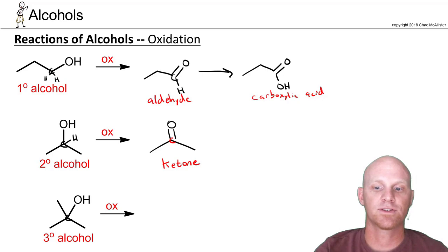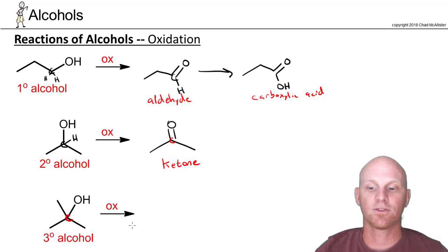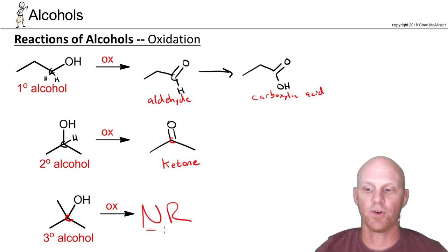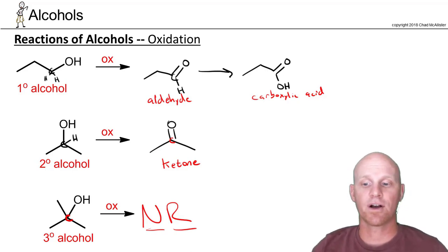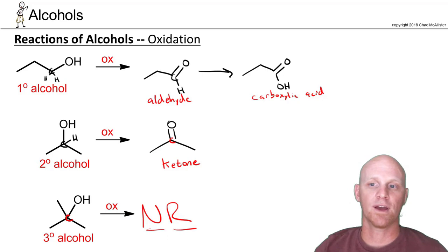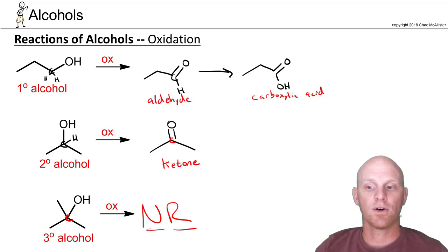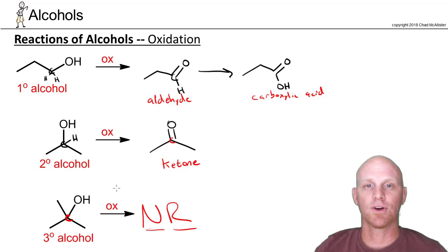For the tertiary alcohol, because the carbon with the hydroxyl group doesn't have any hydrogens, any normal oxidation is not possible — no reaction. So only primary and secondary alcohols are things we need to worry about. Tertiary alcohols will not be oxidized by any of the reagents you're going to learn about. In summary: primary alcohols can be oxidized one step or two, secondary alcohols only one step is possible, and based on what kind of reagents we have, we can differentiate what's going to happen.